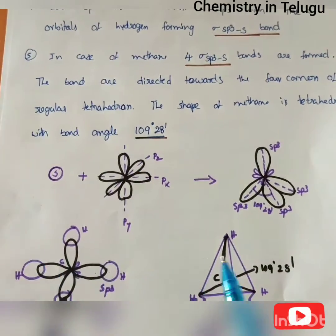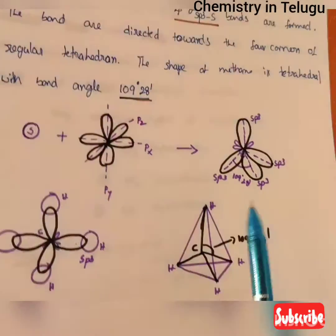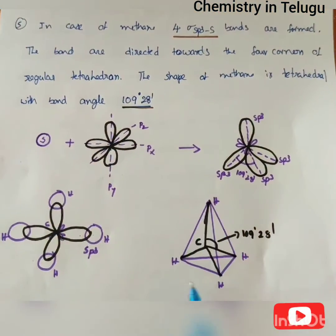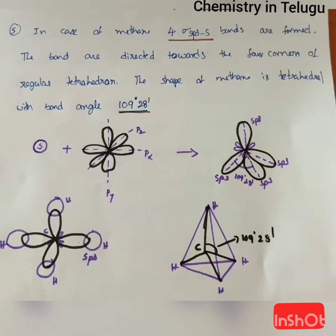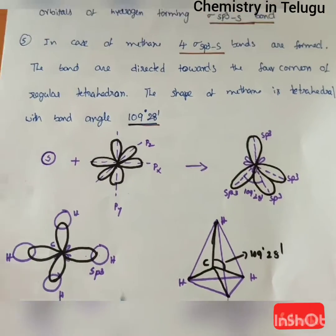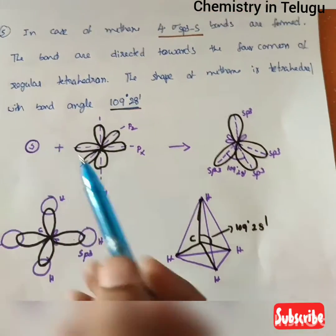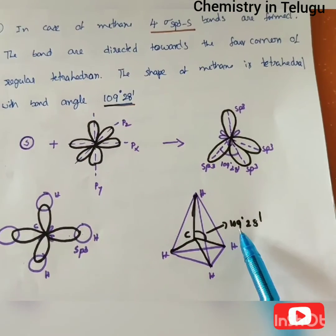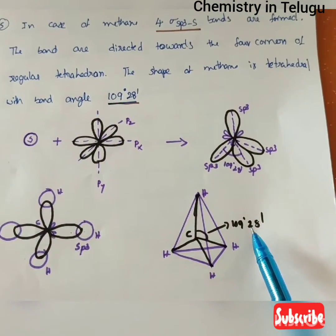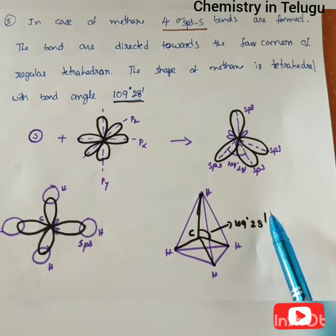This gives methane a regular tetrahedral shape. The bond angle in the tetrahedron is 109.5 degrees.